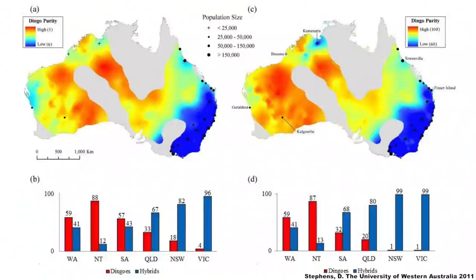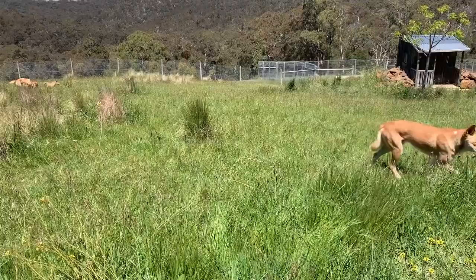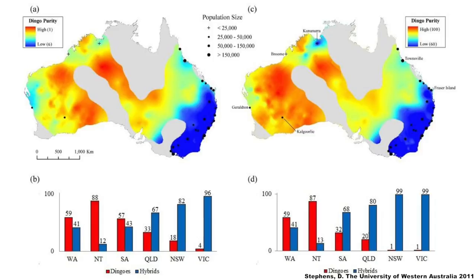This problem is so pronounced that it's estimated that less than half of Australia's wild canids are pure dingoes. Research conducted in 2011 shows that pure dingoes are found in highest concentration in the north and centre of the country, where around 88% of wild canids are pure dingoes, while almost none are found in the south-east, where only 1% of wild canids are pure dingoes.